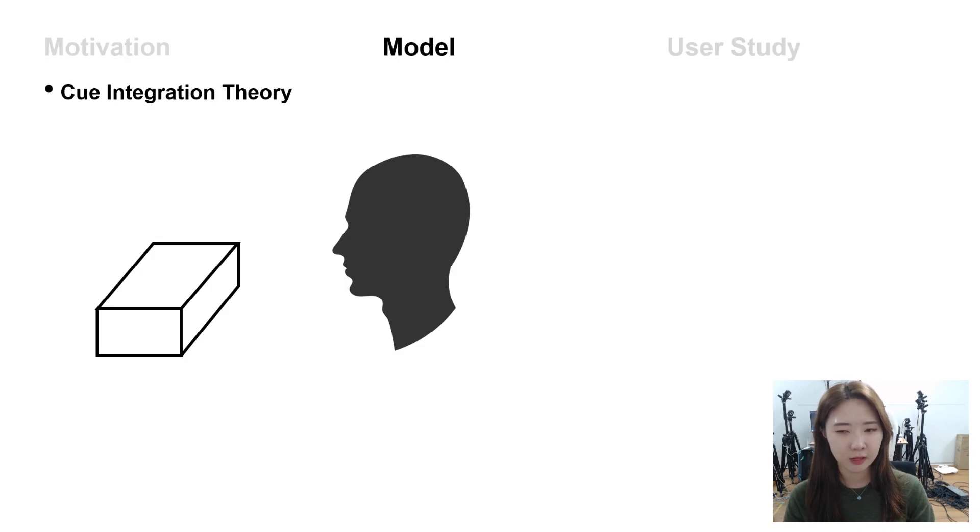Our model is derived from a cue integration theory. The theory explains how perceptions from different cues are integrated when we perceive certain physical properties. In general, when people try to recognize an object, people use various sensory signals to perceive it.